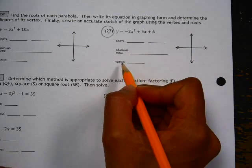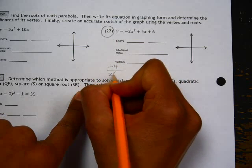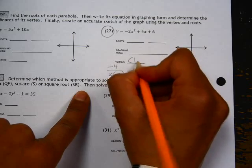So let's start right here at the vertex. The formula to find the vertex is negative b over 2a. So negative 4 over 2 times negative 2 is equal to 1. That is the x value of the vertex.